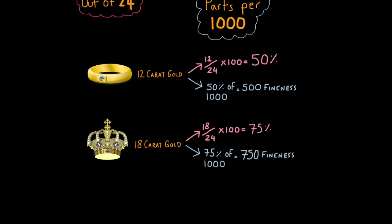If this gold crown was 18-carat gold, then you'd work out the purity as follows. 18 divided by 24 times 100 would give you a purity of 75%. So the fineness would be 75% of 1,000, which would be 750 fineness.